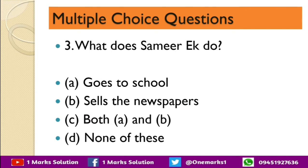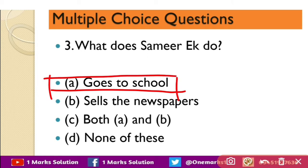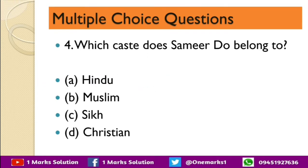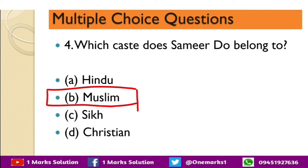Next question: what does Samir 1 do? The options are goes to school, sells the newspaper, both, or none of these. Samir 1 goes to school. Next question: which community does Samir 2 belong to — Hindu, Muslim, Sikh, or Christian? The correct option is Muslim.